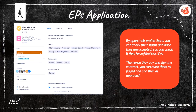This is an EP application. By opening their profile, you can check the status, and once they are accepted, you can check if they have filled the RDA. Then once they pay and sign the contract — which is the acceptance note — you can mark them as paid and then as approved. You should be very happy at this moment because you are making a bigger impact. Congratulations!